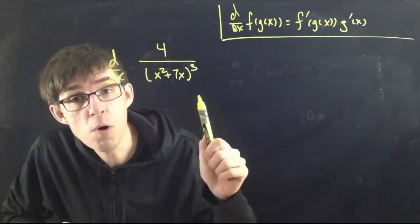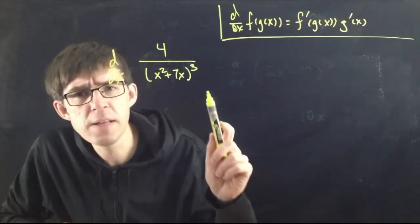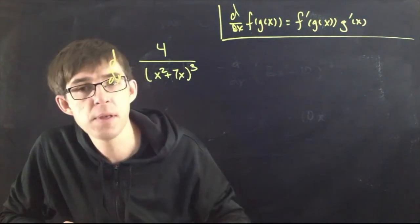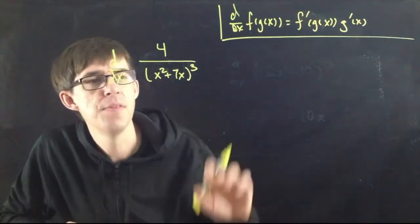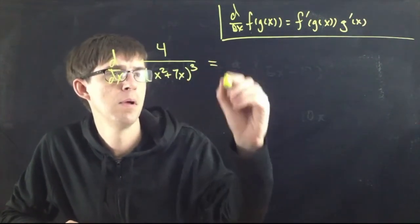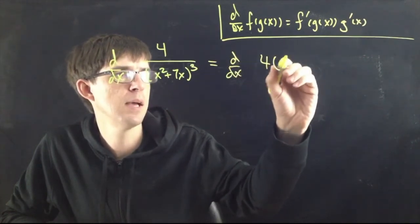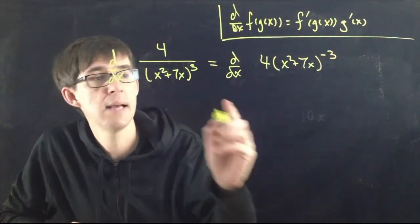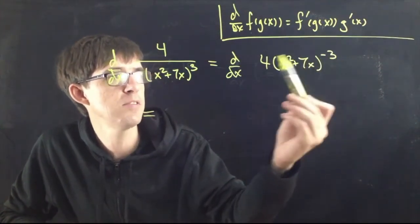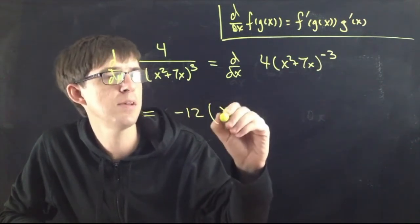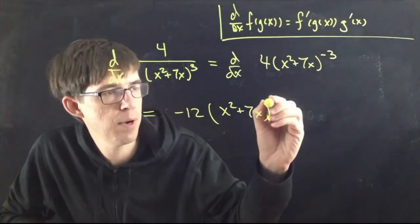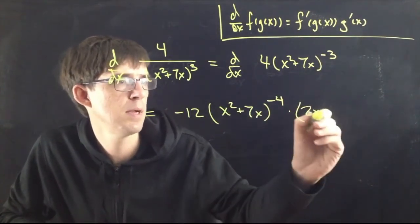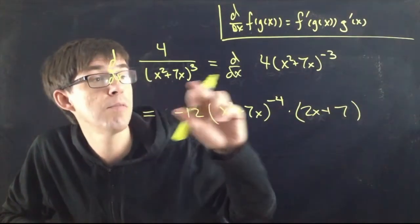As written, 4/(x² + 7x)³ looks like a quotient, so you could use the quotient rule. But you can rewrite it using a negative exponent: 4(x² + 7x)^(−3). Now apply the chain rule: bring down −3 and multiply by 4 to get −12 in front, write the same thing on the inside, decrease the exponent to −4, then multiply by the derivative of the inside, 2x + 7. So the answer is −12(x² + 7x)^(−4) · (2x + 7). Sometimes you want to rewrite first, then apply the chain rule.